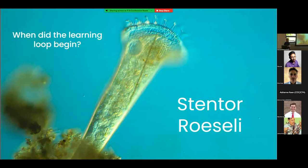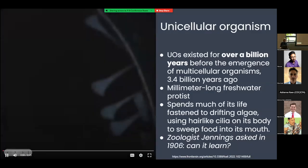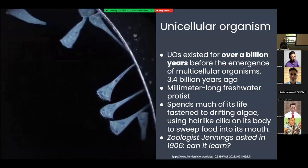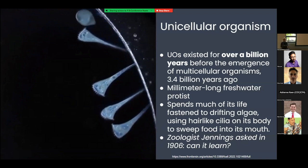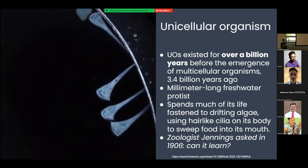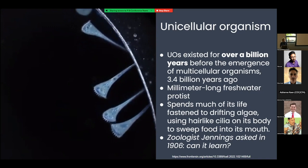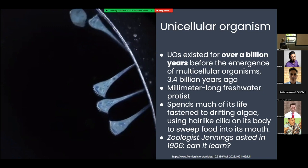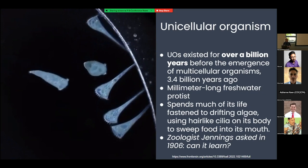Stentor Roselli is a unicellular organism. Unicellular organisms existed for over a billion years before the emergence of multicellular organisms — in the fossil record we can go back about 3.4 billion years. The Stentor Roselli is a millimeter-long freshwater protist that spends much of its life fastened to drifting algae, using cilia to sweep food into its mouth.